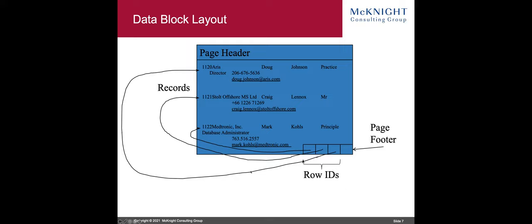The row IDs are offsets to where records begin on the page. If you go to page three, record two, the database can jump three times the page size from the beginning of storage, land at the beginning of the page, go to the offset, and read that record. What's in the index are the record IDs — the page number and the record ID number within that page — so you can go straight to the record you want.